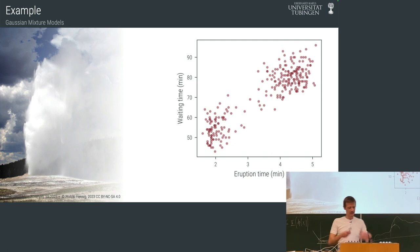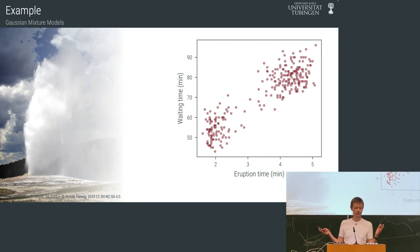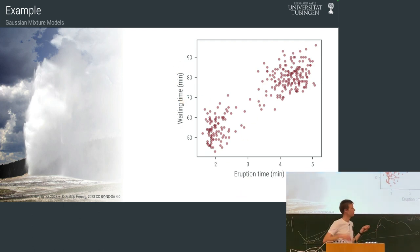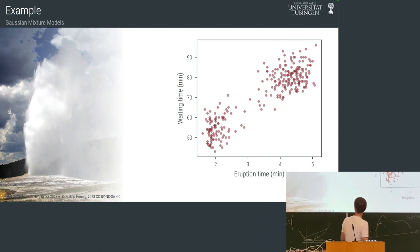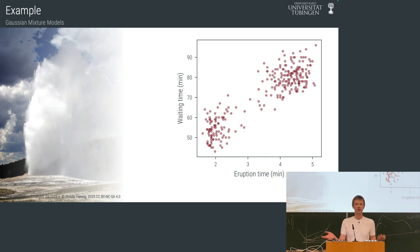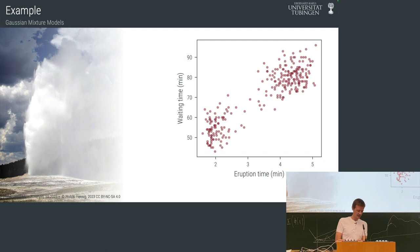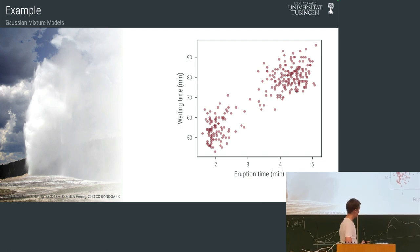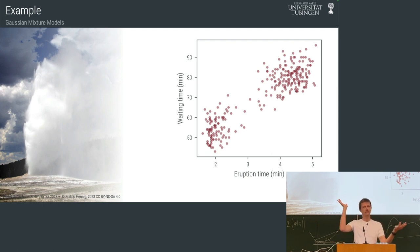The geyser has an eruption with remarkable regularity — that's why it's called Old Faithful. Eruptions happen every 50 to 90 minutes. At some point someone from the National Park Service collected a dataset of waiting time versus eruption duration. It turns out that if you wait longer, more water collects in the cavern and the eruption is longer. More interestingly, this dataset has a bimodal structure — there are two blobs, two clusters.